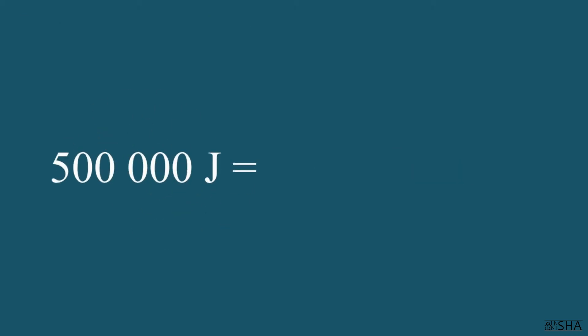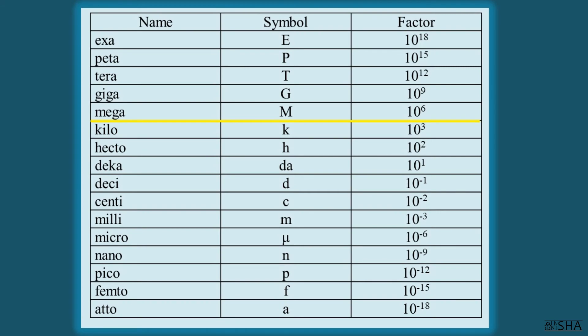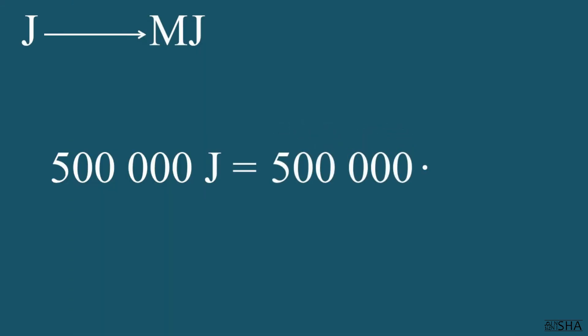Convert 500,000 joules to megajoules. After the equals sign, we write down 500,000 and multiply it by 10 to the negative 6th power. And this equals 0.5 megajoules.